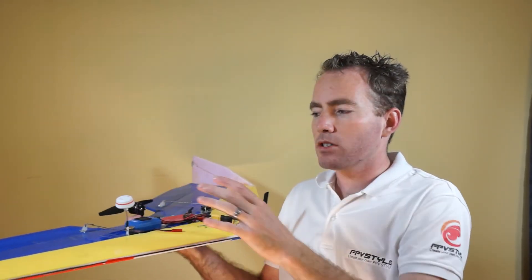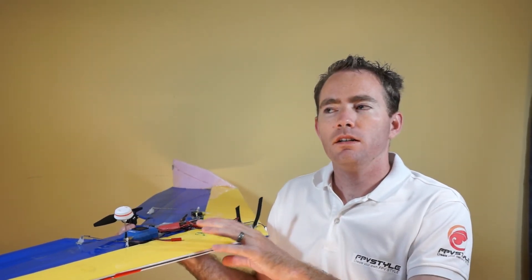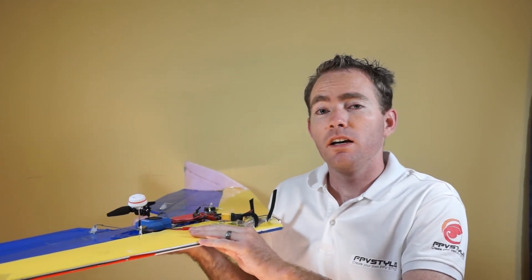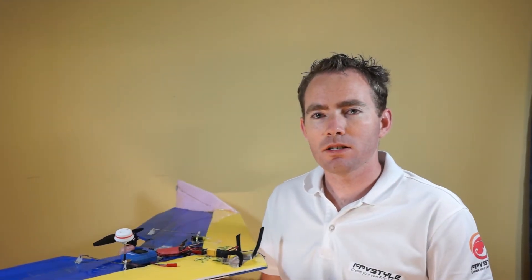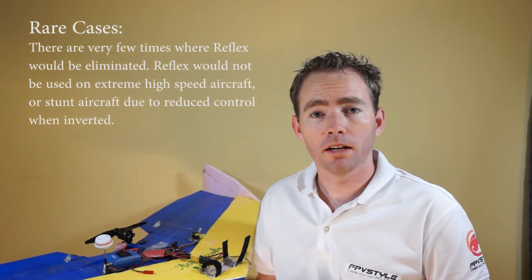There's a lot of times where if you build a flying wing that doesn't have any reflex in it, you'll notice that it'll have wag or it'll just have strange tendencies to it. And if you start mixing in a little bit of reflex and adjusting your CG, you'll notice that it'll really lock in and fly much better.